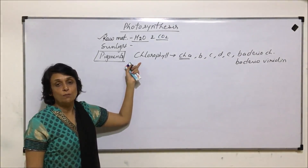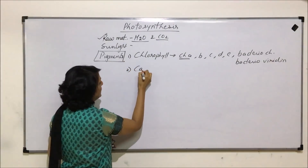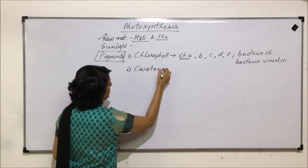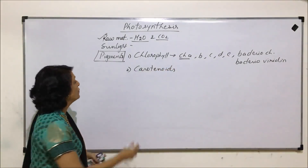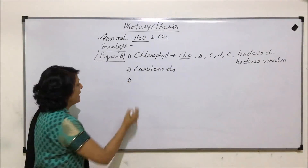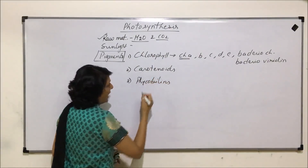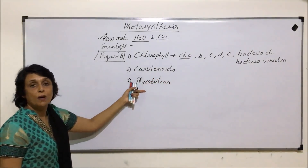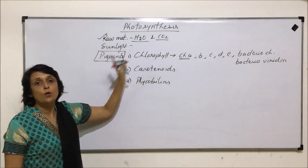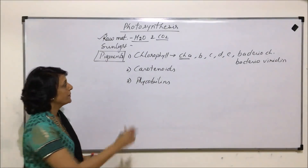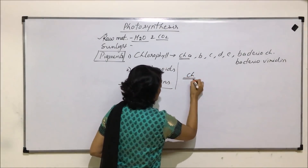Chlorophyll is the most important pigment. The next category of pigments are carotenoids. Third, there are phycobilins, and under this we will talk about two types: phycoerythrin and phycocyanin. So now we want to start with the chlorophyll pigment and its structure.